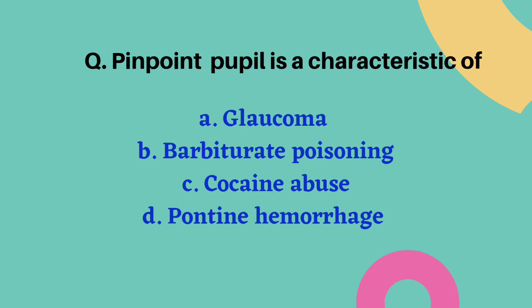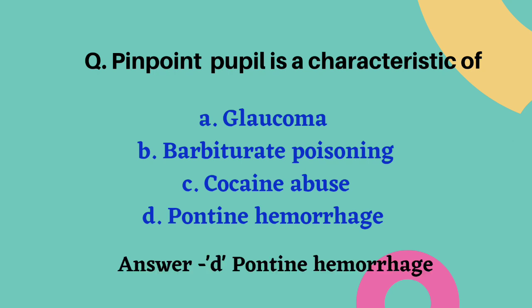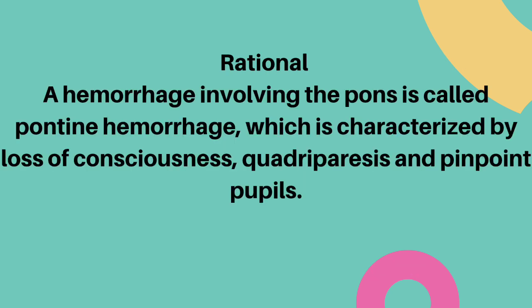Pinpoint pupil is characteristic of which condition? Options are glaucoma, barbiturate poisoning, cocaine abuse, and pontine hemorrhage. The correct answer is option D — pontine hemorrhage. A hemorrhage involving the pons is called pontine hemorrhage, characterized by loss of consciousness, quadriparesis, and pinpoint pupils.